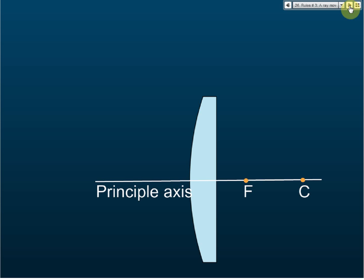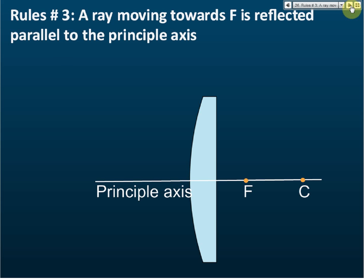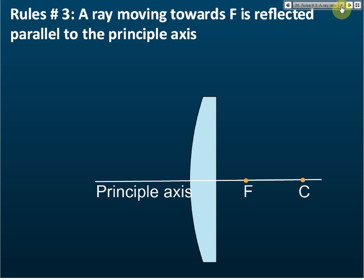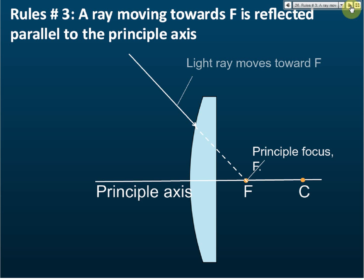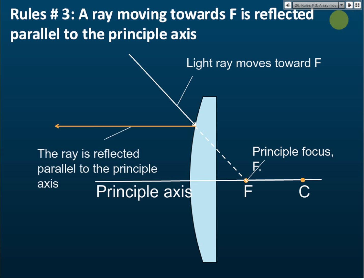Rule number three: a ray moving towards F is reflected parallel to the principal axis. So if the ray moves towards F, it will be reflected parallel to the principal axis.